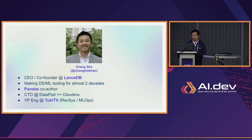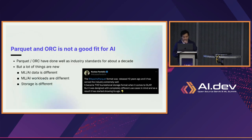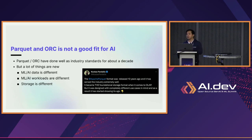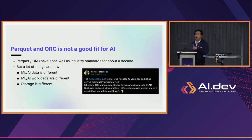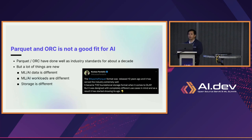That experience motivated me to create this new columnar format. What I noticed at 2BTV, and my co-founder was seeing at Cruise, was that Parquet and ORC — really existing data formats — are not a good fit for AI. Parquet is about 10 years old, and it's done great for analytics and managing tabular data, but for machine learning and AI, we now have lots of things that are different.